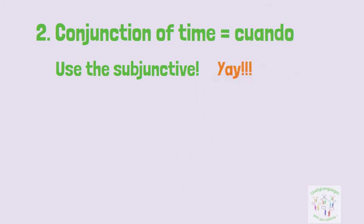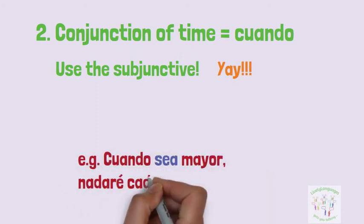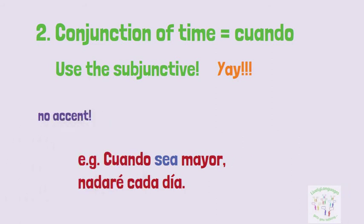For example, in English we can say, When I'm old, I'll swim every day. However, cuando, with no accent, in this context will trigger the subjunctive. So we'd say, Cuando sea mayor, nadaré cada día.